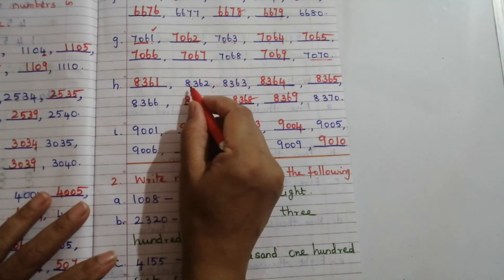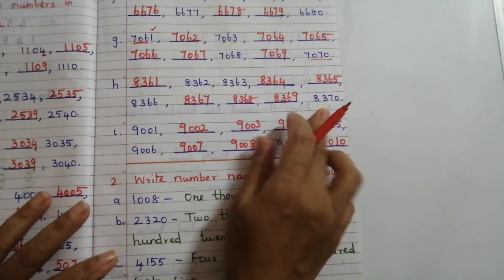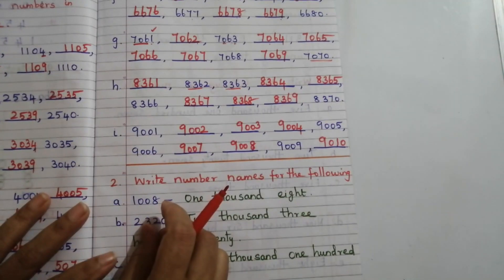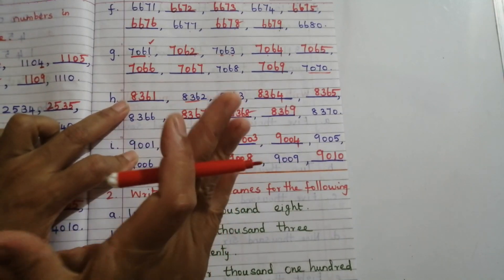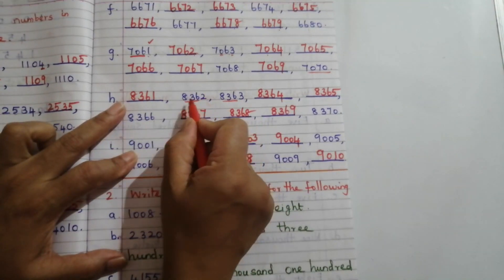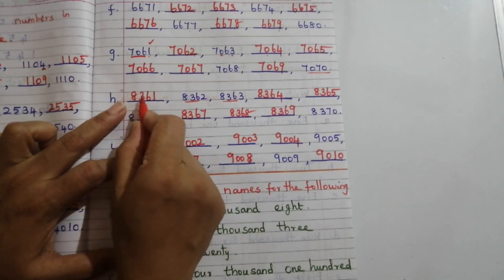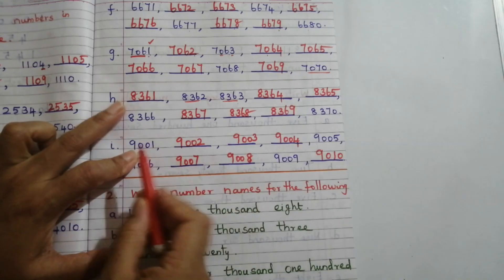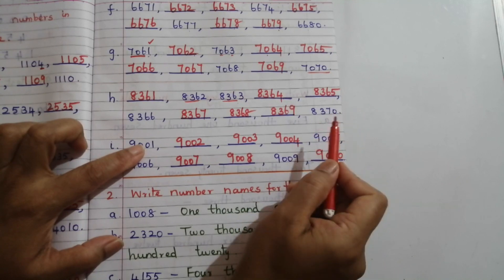Problem H: dash, 8362, 8363, and so on. The first three digits are the same in all numbers except the last one. The number before 8362 is 8361. So the sequence is: 8361, 8362, 8363, 8364, 8365, 8366, 8367, 8368, 8369, and 8370.